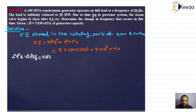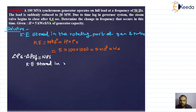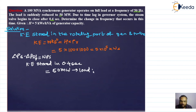The gate closing operation begins after 0.4 seconds, so after that point we no longer have net surplus power. We get that net surplus power only for 0.4 seconds. Therefore, we calculate the amount of kinetic energy stored during that 0.4 second window. The load reduction is 50 MW.